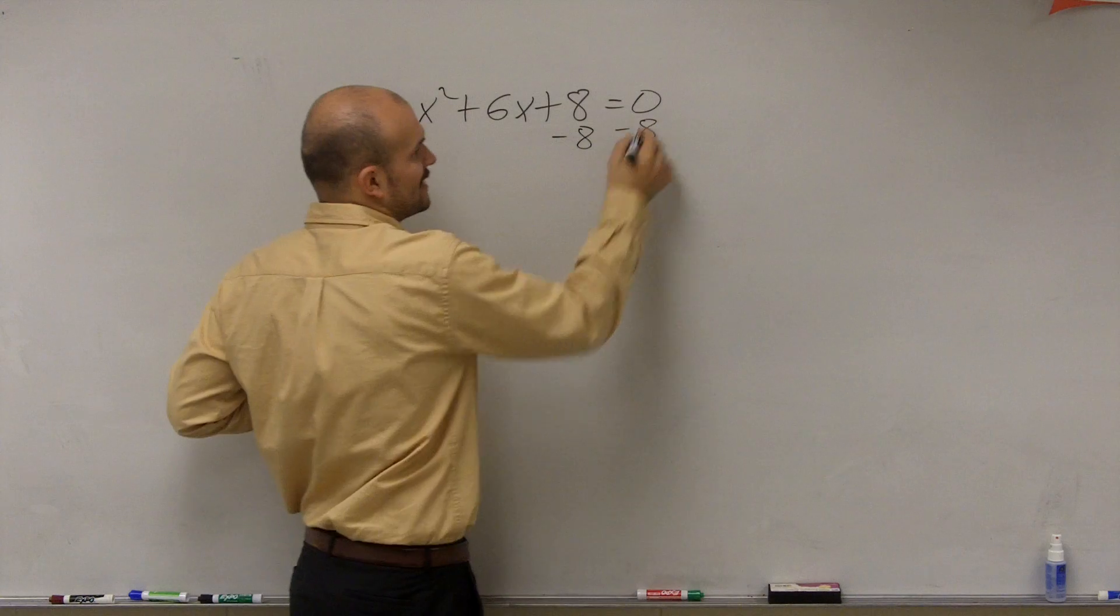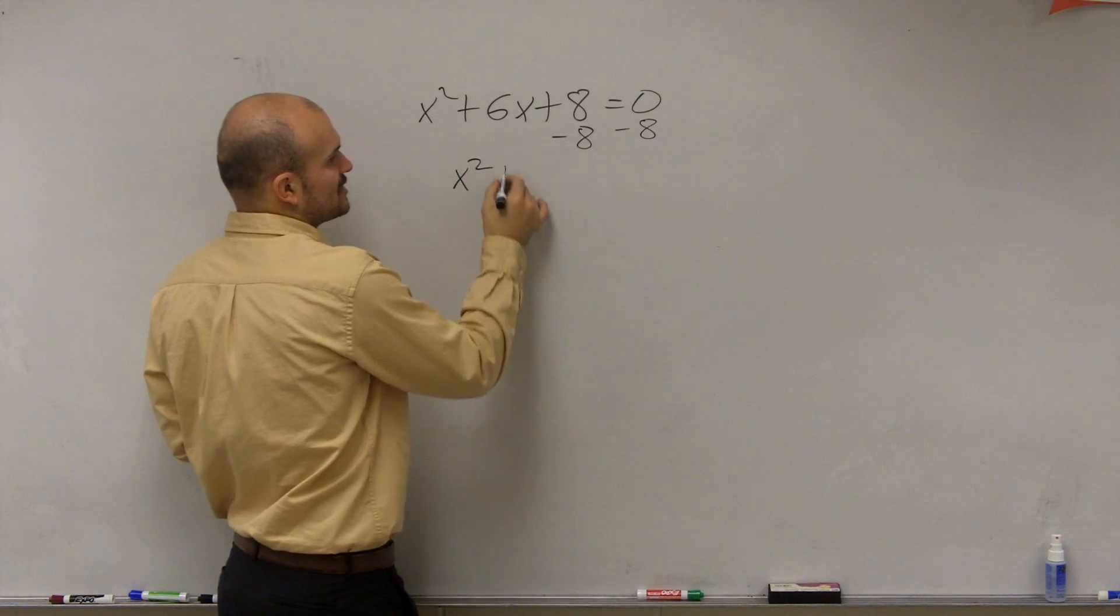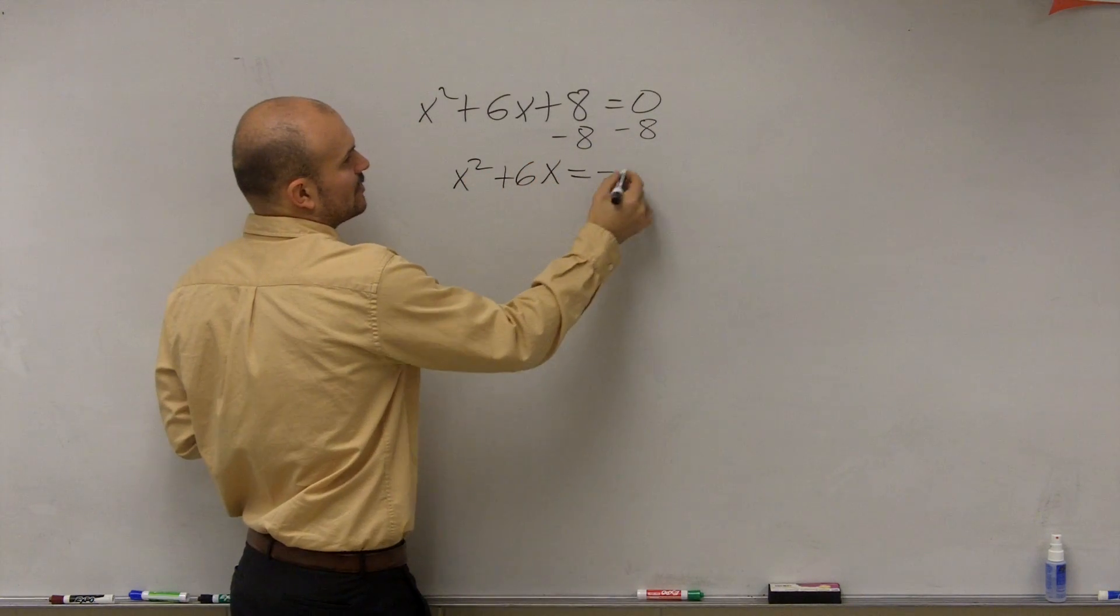So the first thing I'm going to do is subtract the 8 to the other side. x squared plus 6x equals negative 8.